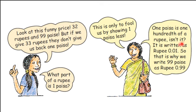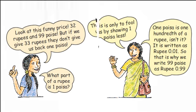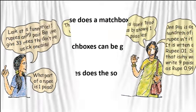One paisa is one hundredth of a rupee. It is written as rupee 0.01. That is why we write 99 paise as rupee 0.99.